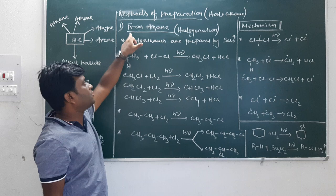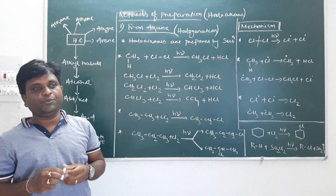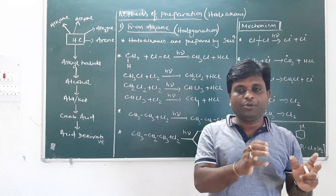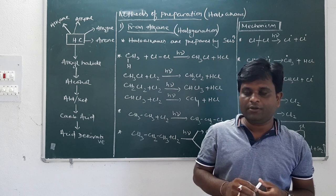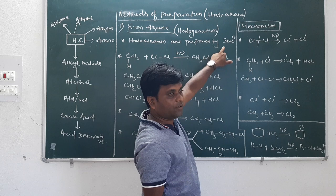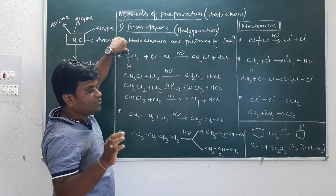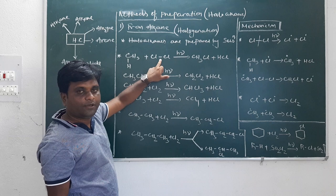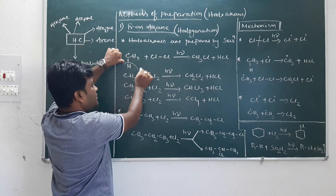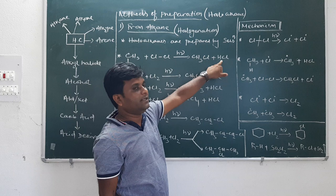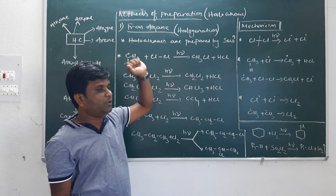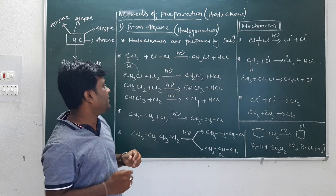First method is from alkanes. The method is halogenation. Methane reacts with chlorine in the presence of light. In the reaction, hydrogen is replaced by chlorine, forming CH3Cl.